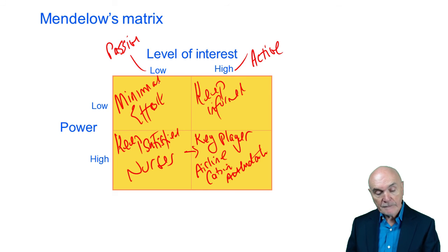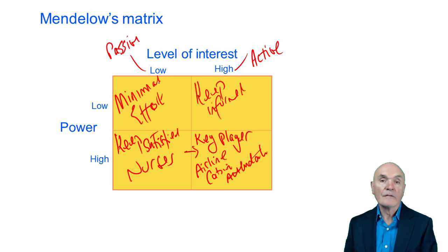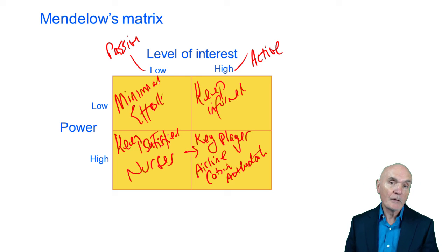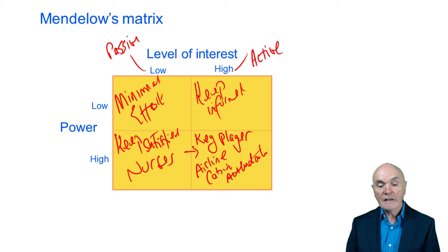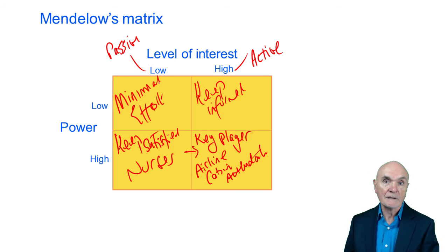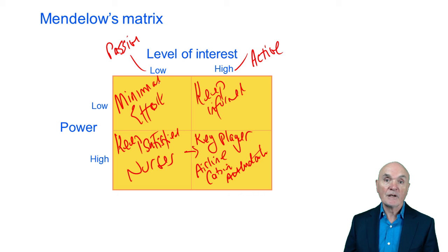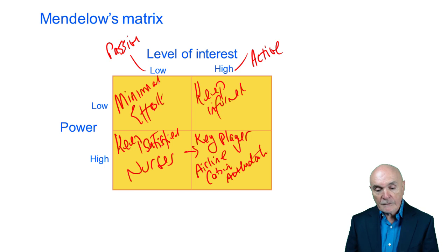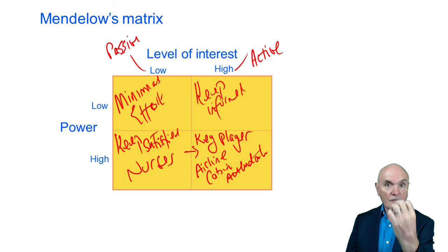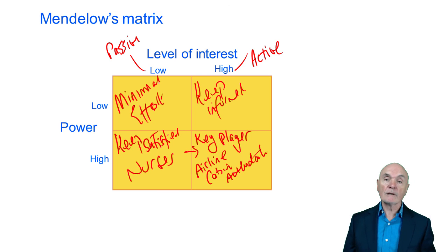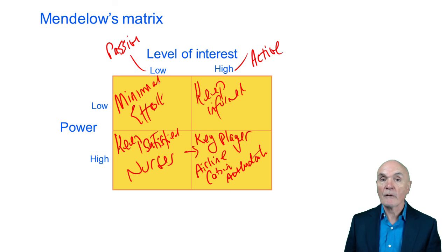Examples of people who may come into that category are unskilled workers. Being unskilled gives you low power, because there are plenty of people who can replace you very quickly. You may also have low interest if you're not looking for a particular career in the organisation — you take casual work on and if you don't like it you just move on. Key players are at the front of the queue in getting what they want, while minimal effort stakeholders are at the back.